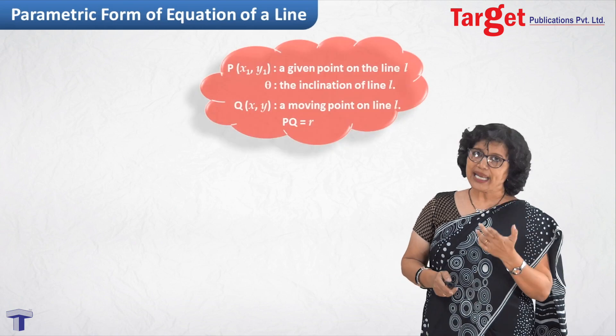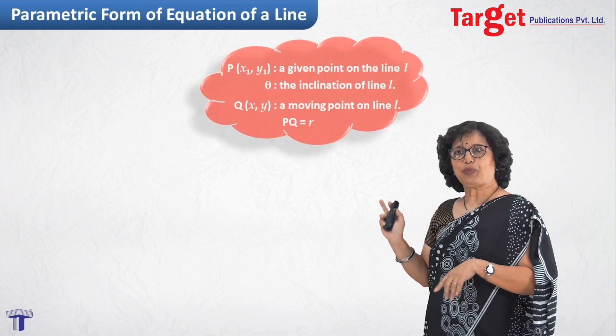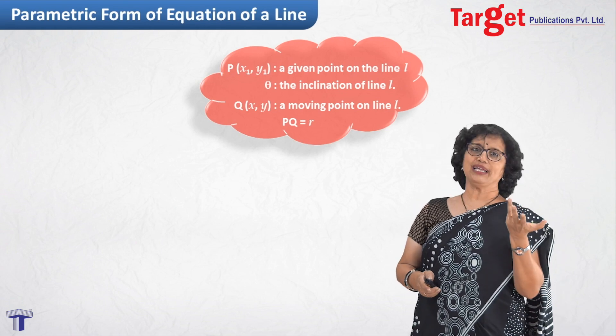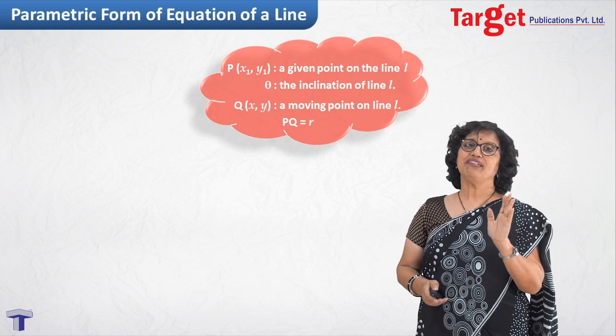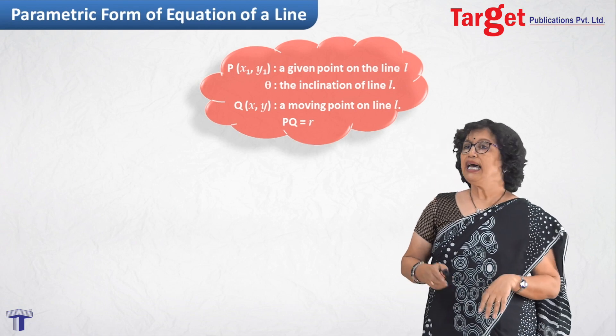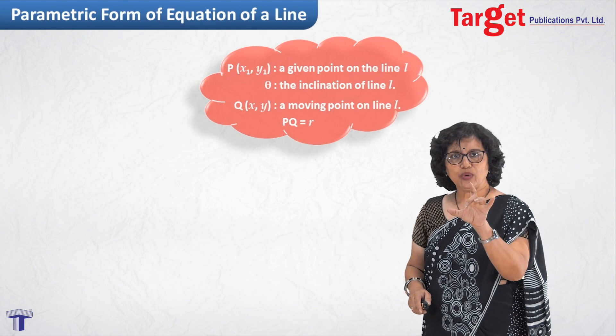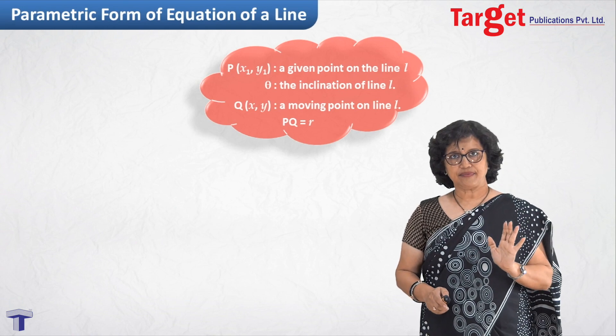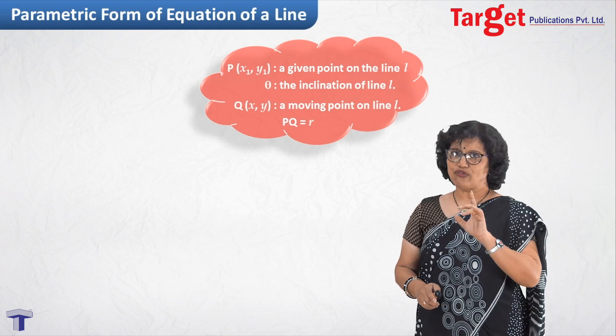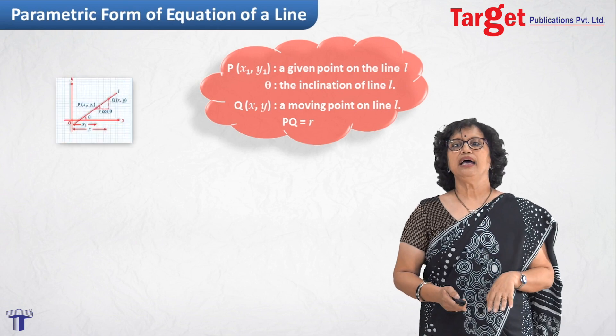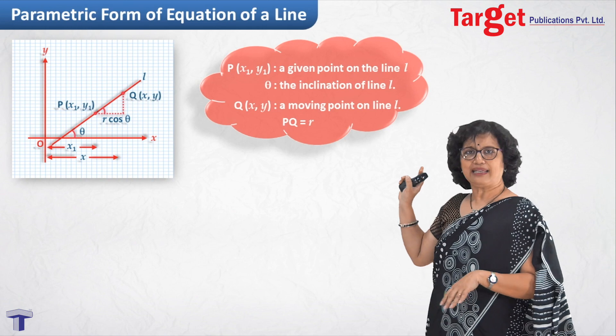Now what I do is, I take two points, one is P and another is Q. Q is a moving point whose coordinates are x and y, and x1, y1 is a fixed position which I may name as P. An inclination is theta and the distance PQ I am writing as R. So there are things involved: x, y, x1, y1, R and theta.